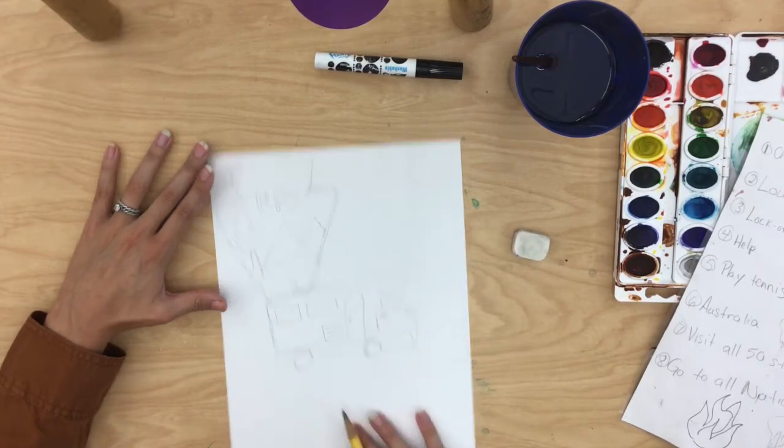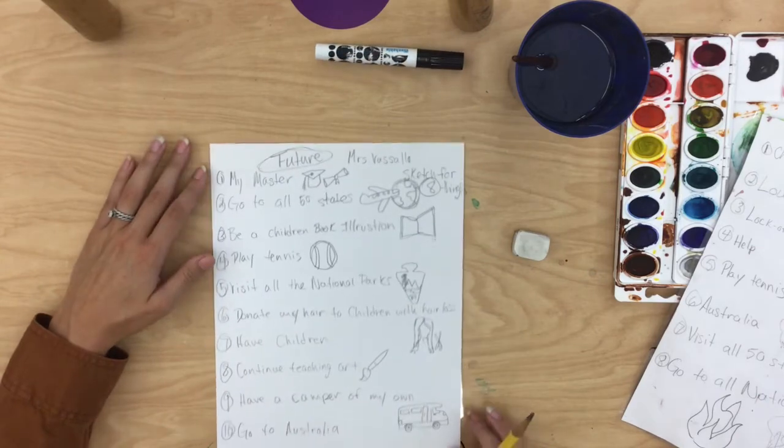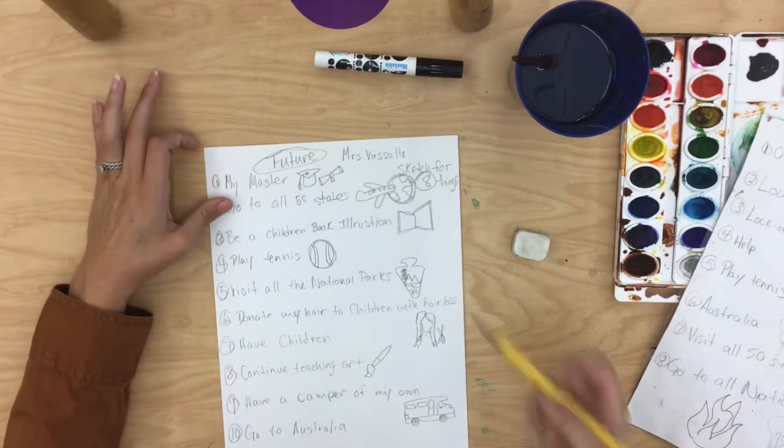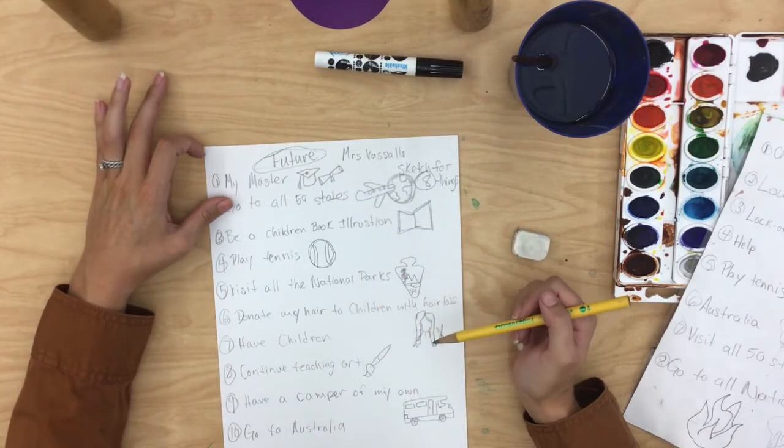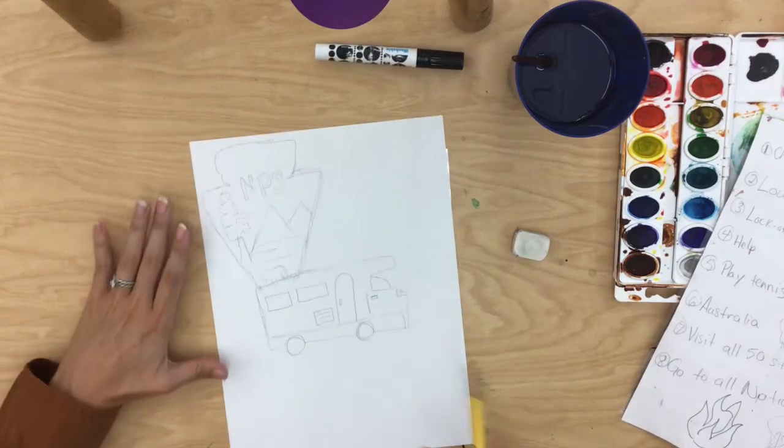The next thing that I'm going to draw, let me check and see what do I want to do here. I'm going to do get my master's degree and donate my hair. So I'll draw those.